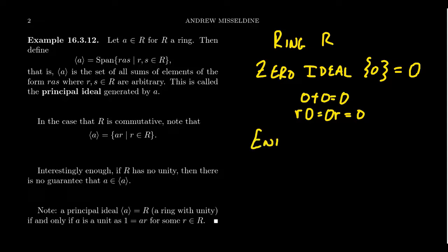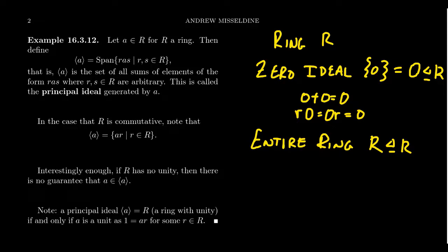The other ideal that's always guaranteed is the entire ring itself — every ring is an ideal of itself. This holds trivially: it's closed under addition because it's a ring, and if you take any element of the ring and multiply it by any element of the ring, you get an element of the ring, so the ring itself is an ideal.